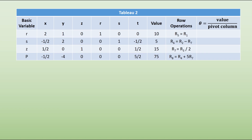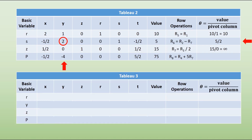We then follow the same procedures again with Tableau 2. First of all, we identify in the p row the value that is the most negative — in this case it is y with minus 4. We then work out the values of theta: 10 over 1, 5 over 2, and 15 over 0. We look for the least positive value, which gives us the s row, meaning that this is our pivot. We then draw our Tableau again, noting that we have changed the s into a y.